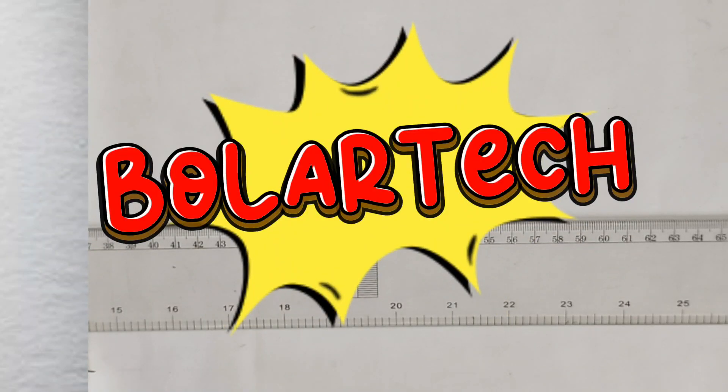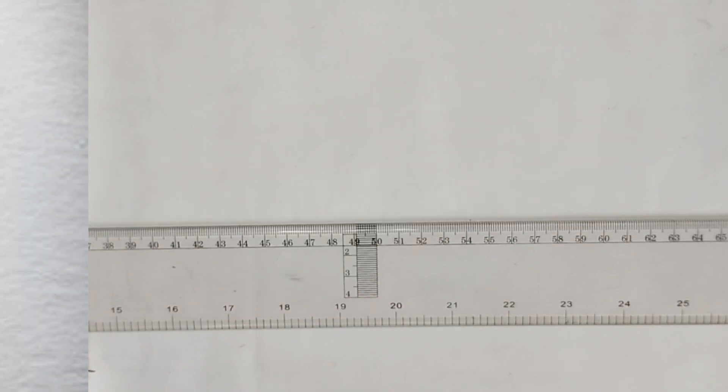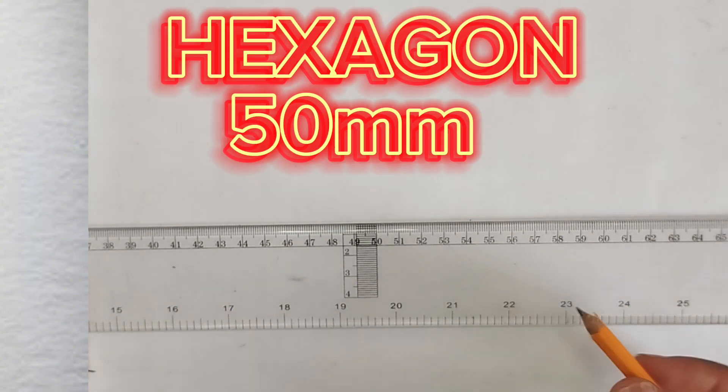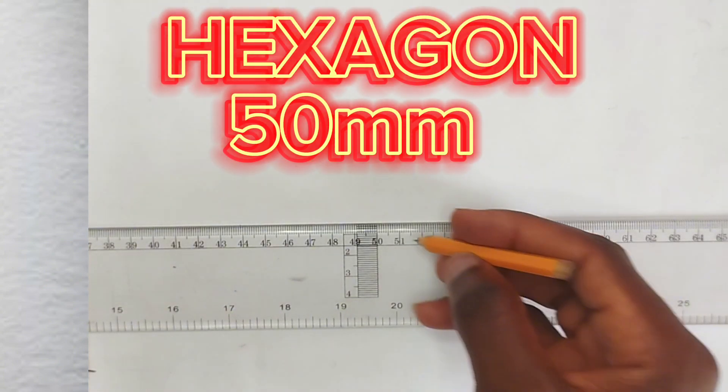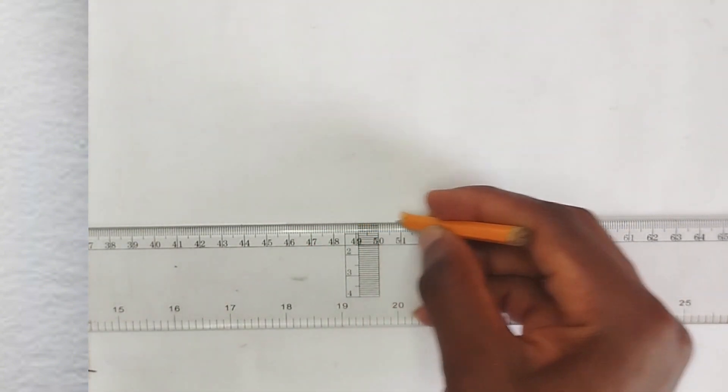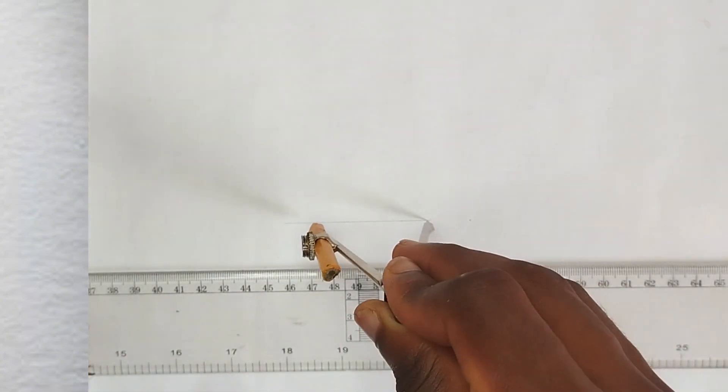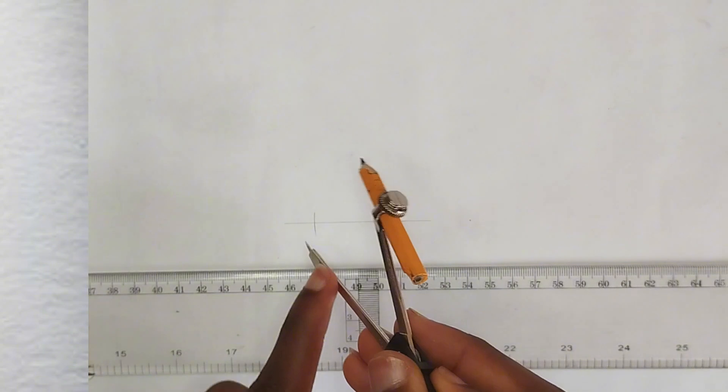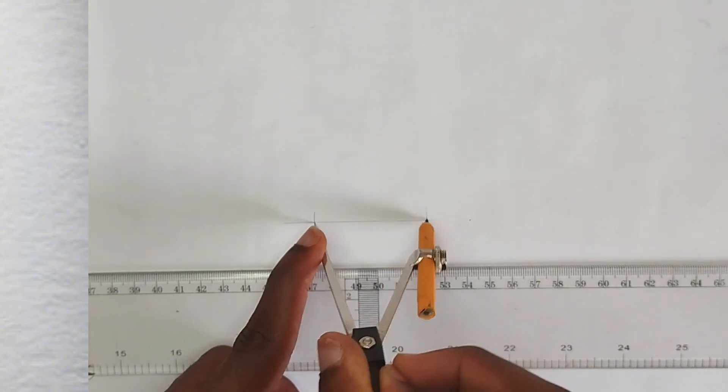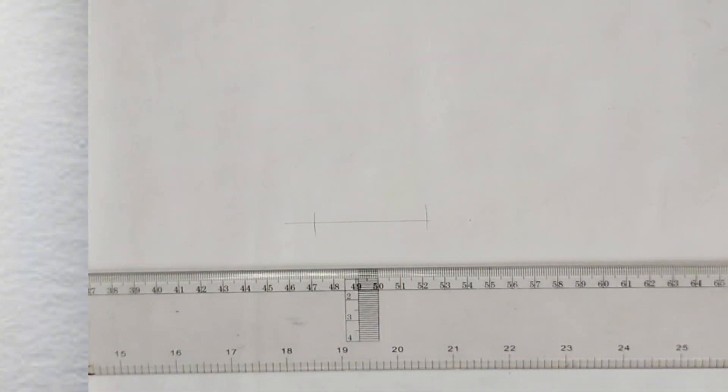Hello guys, welcome to another Bolatek Engineering Drawing video. In this video we are going to be constructing a hexagon of side 50 millimeter. So first of all we'll be drawing our straight line, then we'll pick our compass measuring at our 50 millimeter. We'll strike an arc like this and also strike another arc like this.